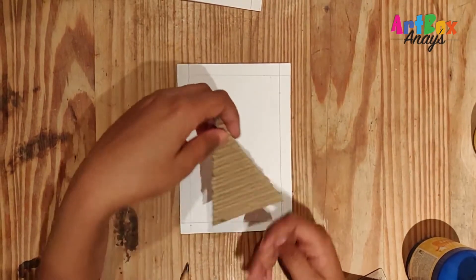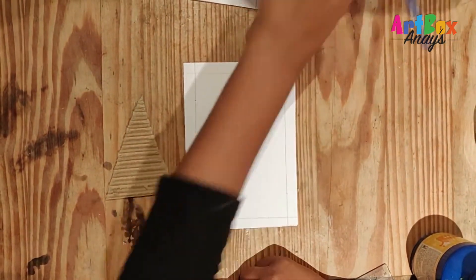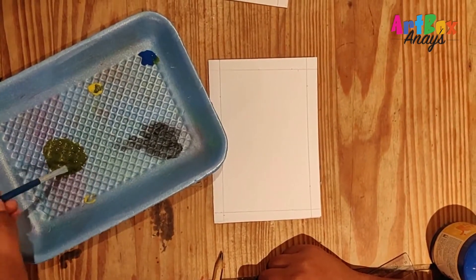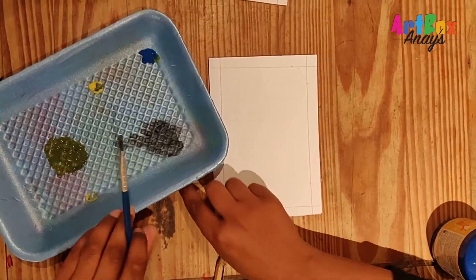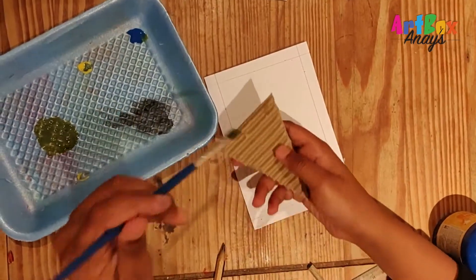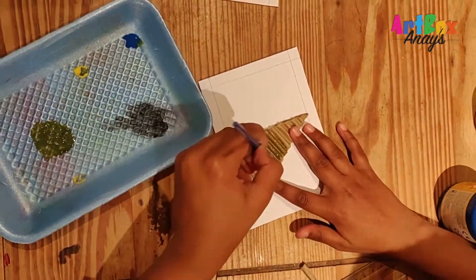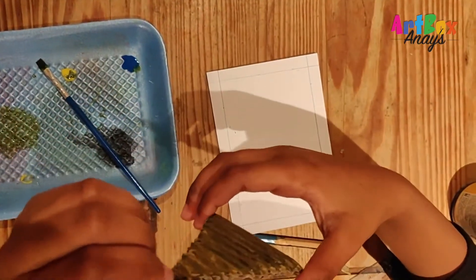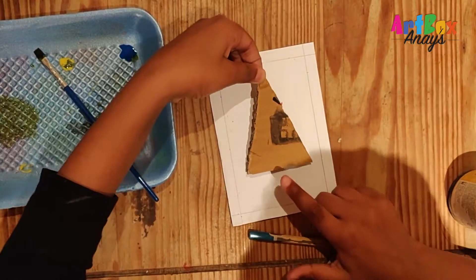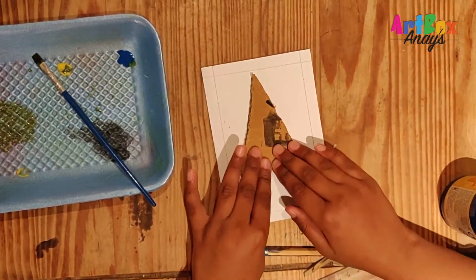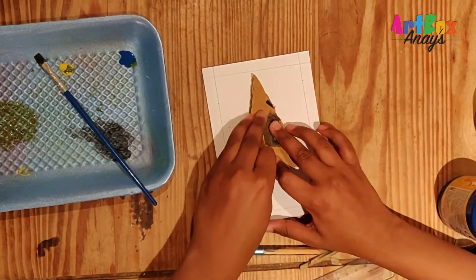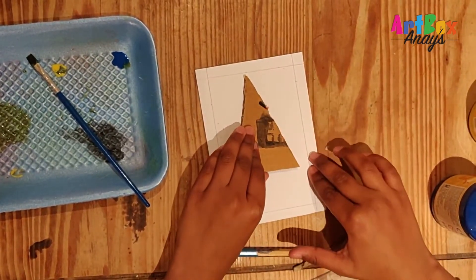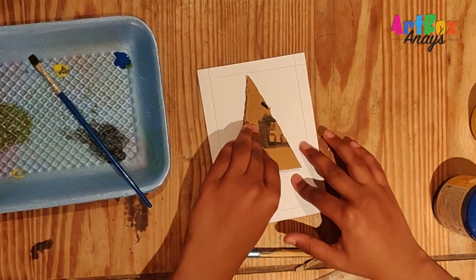Now as you can see this is done. Now I have made in my palette a green color. Now I'm just going to apply this green color onto my cardboard. Now the best part is we're going to stamp there down here. Now you will see the magic part: three, two, one.